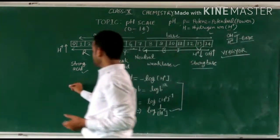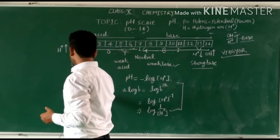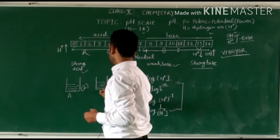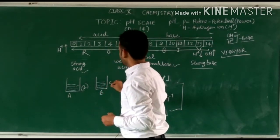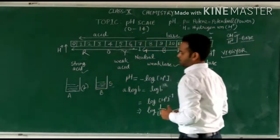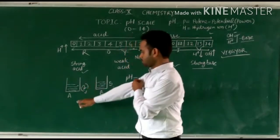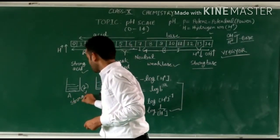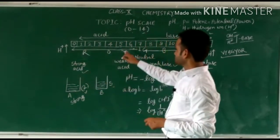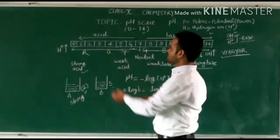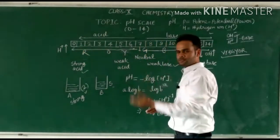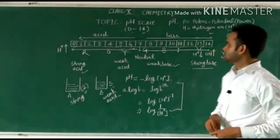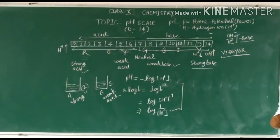In exams, questions might be like this: suppose Beaker A has a pH value of 2 and Beaker B has a pH value of 5 — which is the strong acid and which is the weak acid? Beaker A with pH 2 is closer to 0, so it will be a strong acid. Beaker B with pH 5 is closer to 7 and far from 0, so hydrogen ion concentration is less there — meaning it will be a weak acid. Same logic for bases: pH 8 or 9 is weak, pH 12 or 13 is strong.